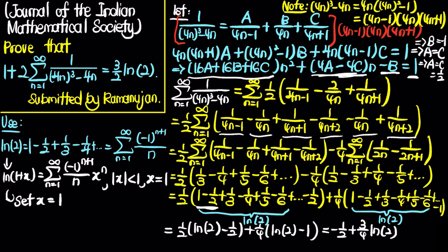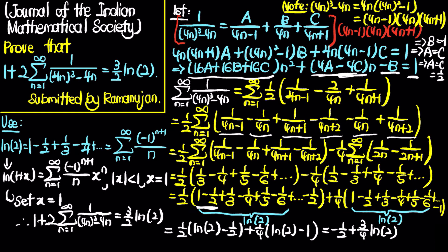Rewriting everything in the desired form: 1 plus 2 times the sum from n equals 1 to infinity of 1 over (4n³ minus 4n) equals 3/2 times the natural log of 2. This is obtained by moving the negative 1/2 to the left-hand side and multiplying the whole equation by 2, thus proving the series.